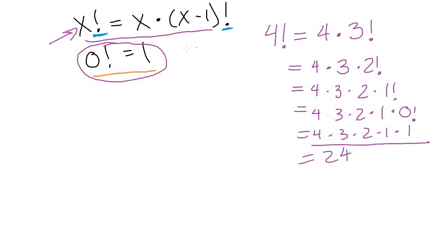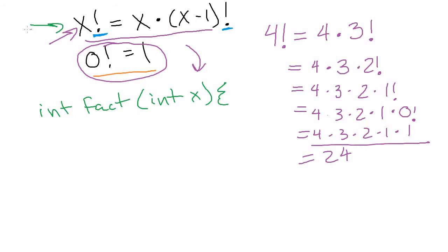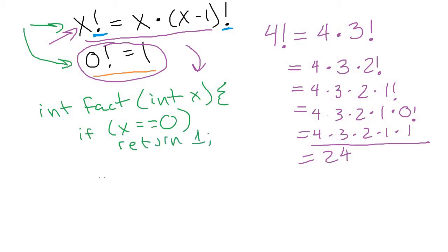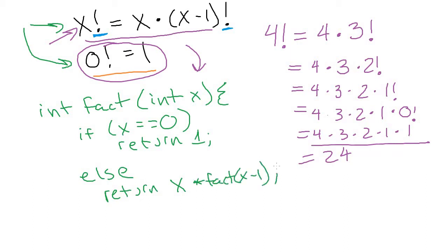Recursion isn't just a programming concept — it's a way of looking at problems, usable in plain mathematics as well. We can translate this recursive mathematical definition of factorial into code pretty easily. It looks like: int fact(int x). We use an if-else because we need to check which case we're in. If x equals zero, we return one — that's our base case. Otherwise, we return x times fact(x minus 1). That's the recursive case, and what makes this recursive is that inside the fact method, we call the fact method itself.